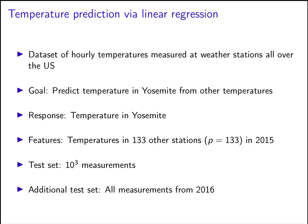Now we're going to apply ordinary least squares to a dataset of hourly temperatures measured at weather stations all over the US. The goal is to predict the temperature in Yosemite — I chose Yosemite basically because I used to live in California. We are going to try to estimate the temperature in Yosemite using temperatures from 133 other stations, so we have 133 features. The logic is: if you're at a central station and suddenly you don't get a reading for Yosemite because something has broken down, you can still use temperatures from all the other stations. We're only using the temperature at these other stations at that particular time.